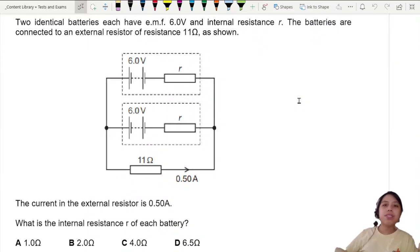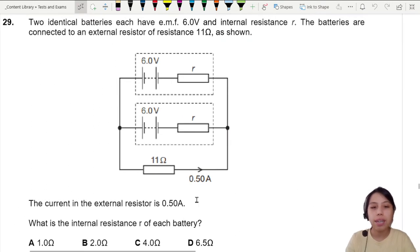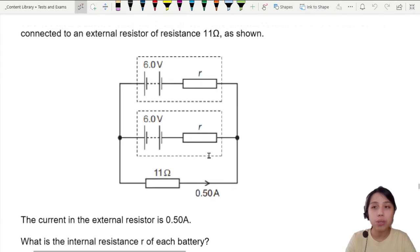Two identical batteries each have 6V EMF and internal resistance R. The batteries are connected to an external resistor of resistance 11Ω. Current is given. What is the internal resistance of each battery?